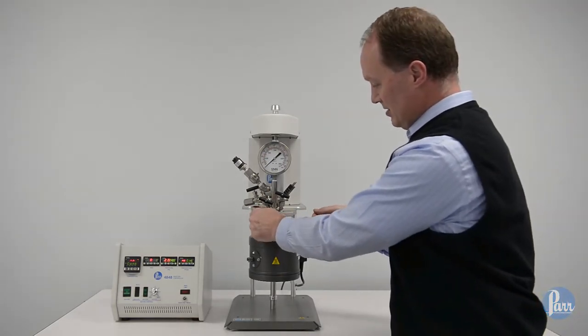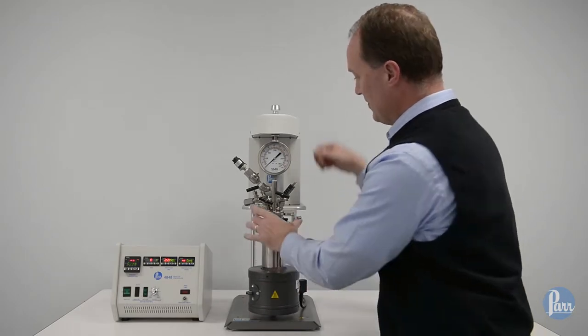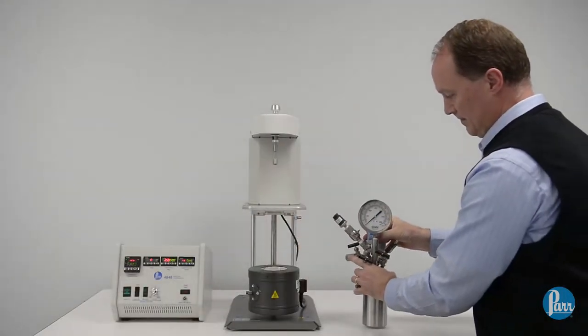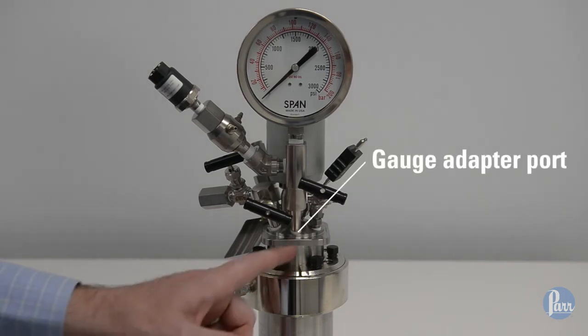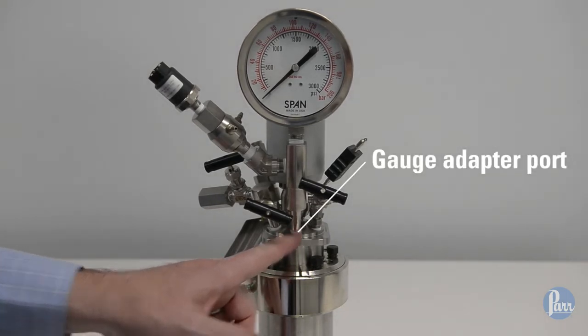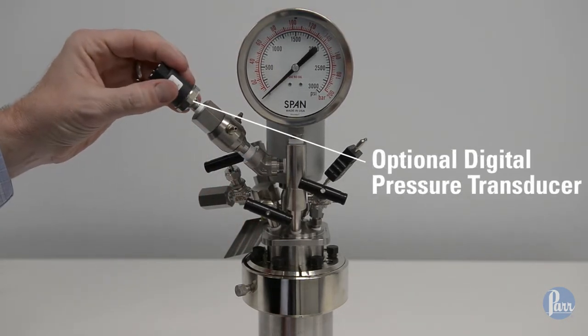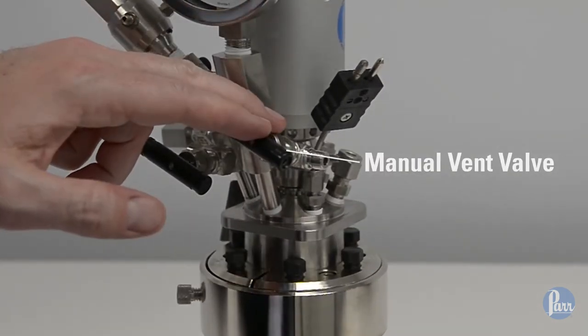I'll remove the vessel assembly so you can see it out of the stand. We'll drop the heater. We'll describe the standard head fittings in a Parr reactor, starting in the front with the gauge adapter port. The gauge adapter includes the analog pressure gauge, an optional digital pressure transducer, and the manual vent valve shown at the right.